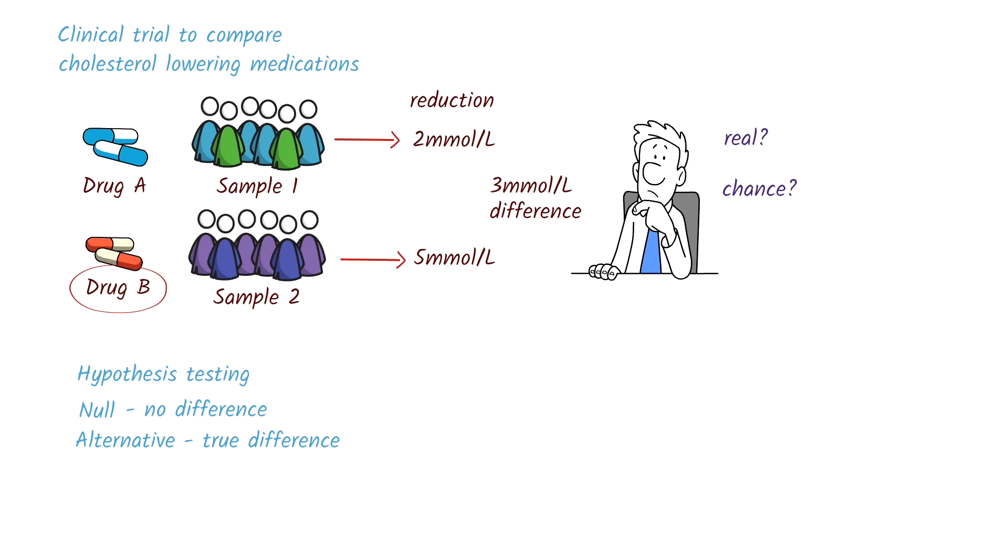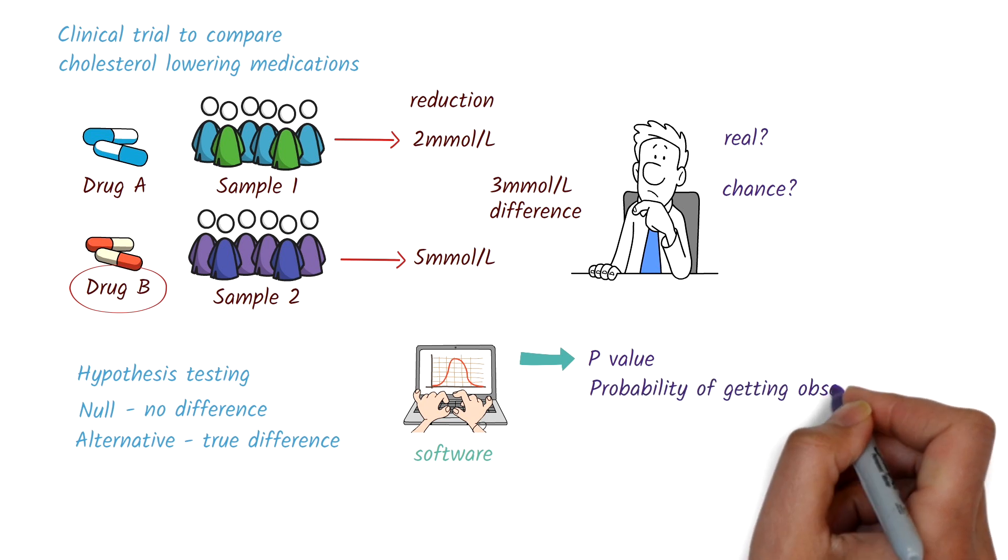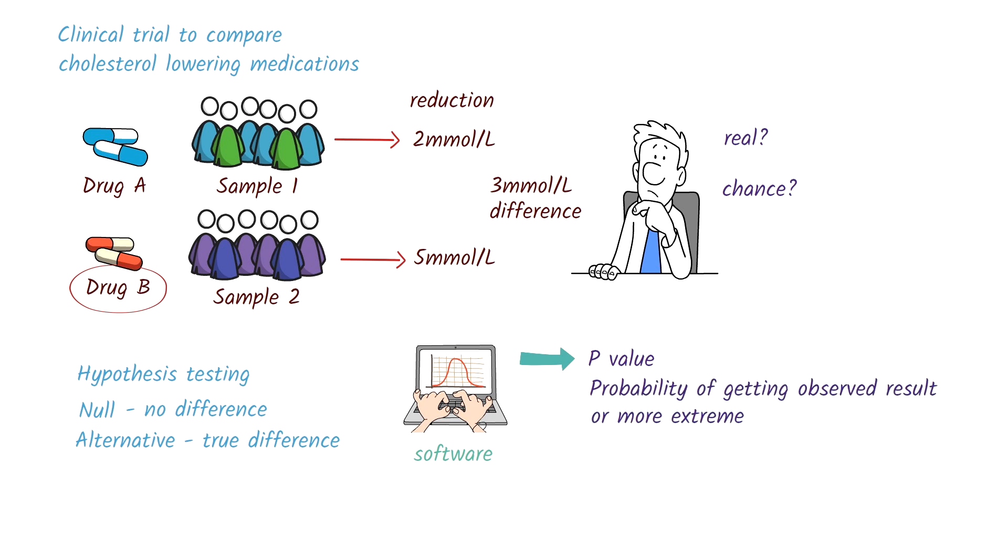To determine which hypothesis is more consistent with the data, we use statistical software to calculate a p-value. The p-value is the probability of obtaining the observed result, or something more extreme, if the null hypothesis is true. That is, if there is no real difference between the groups.